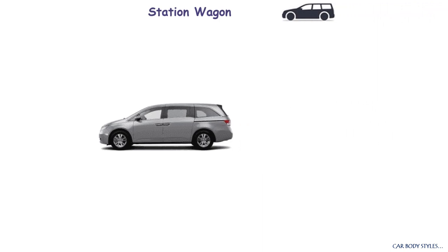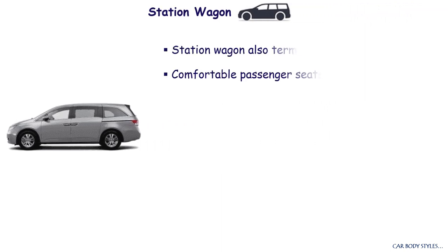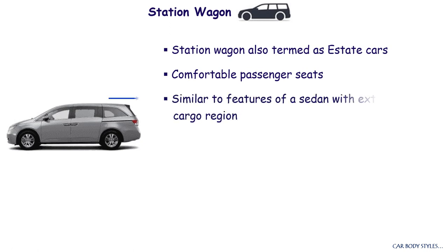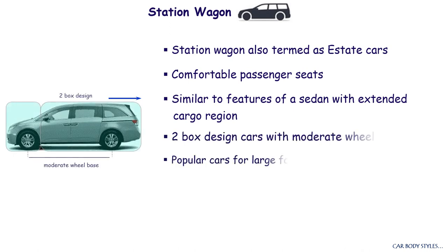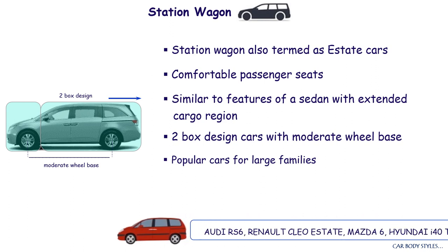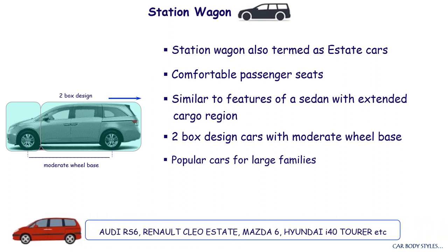Station Wagon. They are also referred to as estate cars. They ensure better comfortable features for passengers. Station wagons are pretty much similar to a sedan with an extended cargo region. The extended cargo region converts a sedan to a station wagon, thus making them a two-box design car. These vehicles include A, B, and C pillars. Common examples of station wagon cars are Audi RS6, Renault Clio Estate, Mazda 6, Hyundai i40 Tourer, and so on.